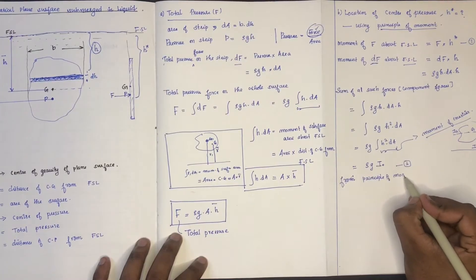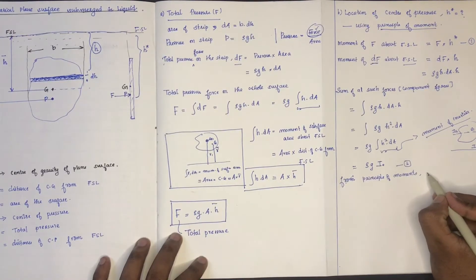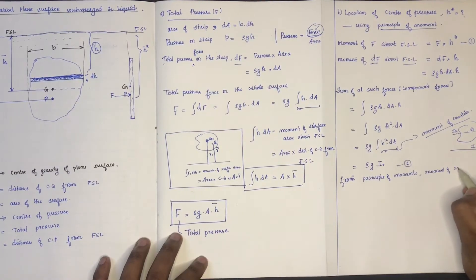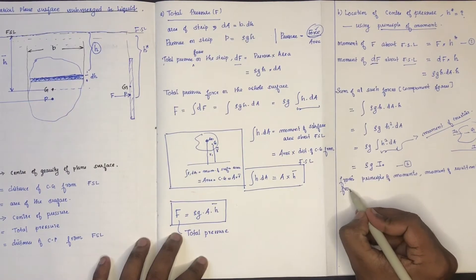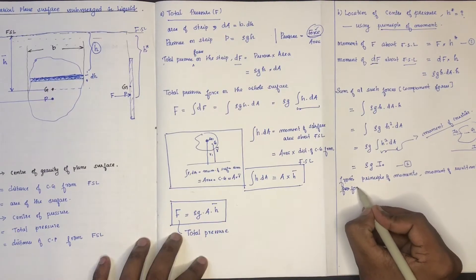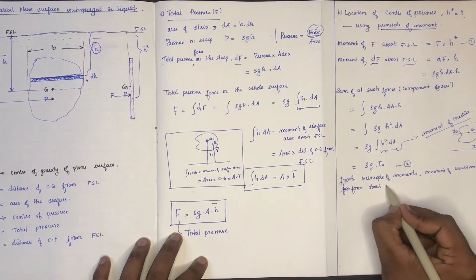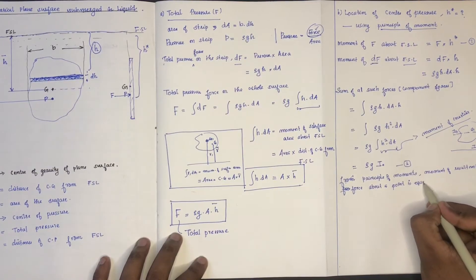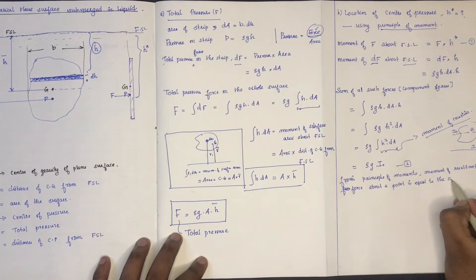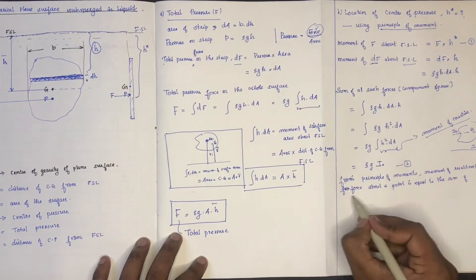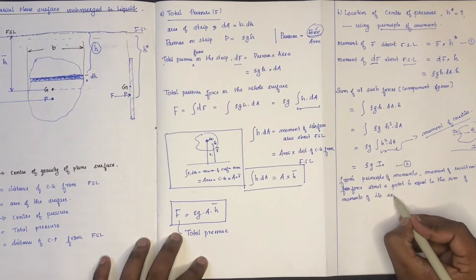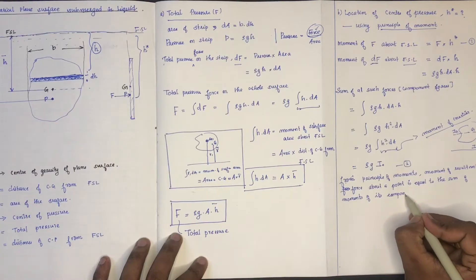From the principle of moment, what is equation number 2? The moment of the resultant force about a point is equal to the sum of the moments of the component forces.